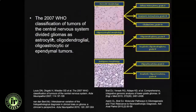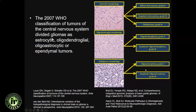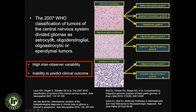Looking back, the older WHO 2007 classification of CNS tumors divided gliomas into astrocytic morphology — labeled as either grade 2, grade 3, or grade 4 — or oligodendrogliomas graded as grade 2 or 3. There was also an ambiguous morphology category called oligoastrocytoma. One of the biggest issues with this histology-based classification was very high inter-observer variability — no two neuropathologists agreed most of the time — and an inability to predict clinical outcome.